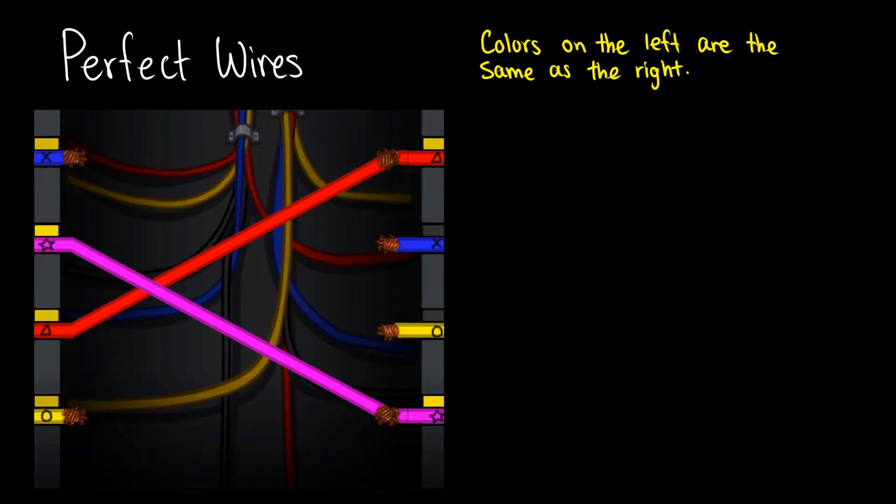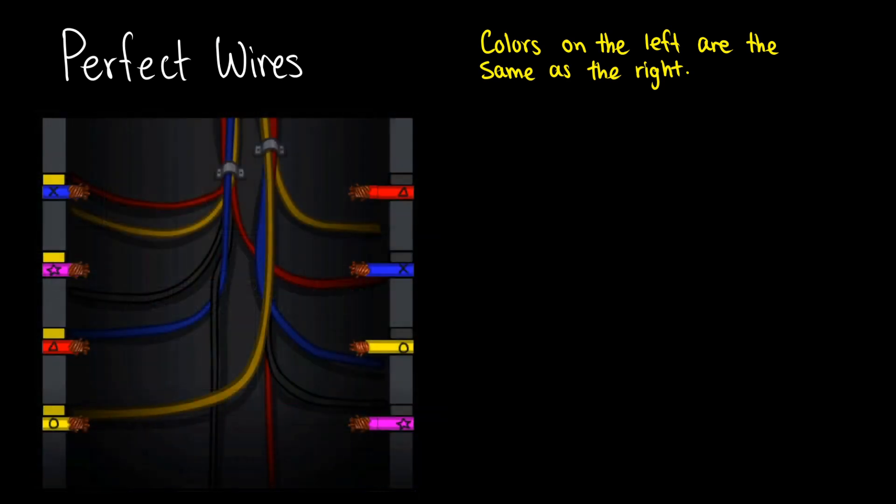What would perfect wires look like? Well, perfect wires are beautiful because they would connect from left to right all in a straight line in every single case. This only happens when you have the colors on the left matching the colors on the right. So in this case, we would need to have blue, pink, red, and yellow in that order. So there's one possibility where we get the sequence that we want.